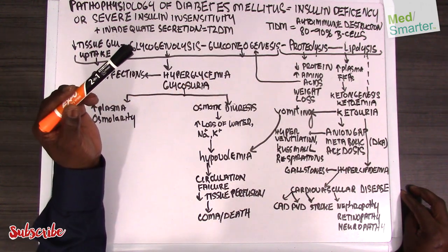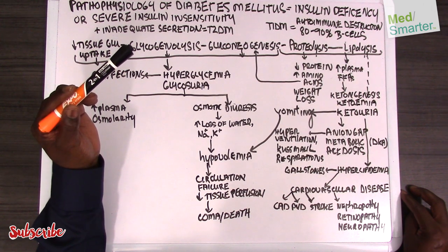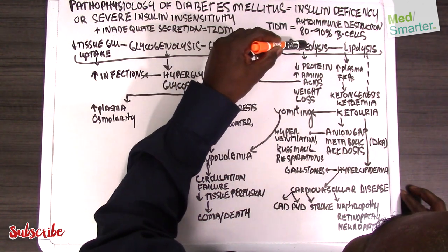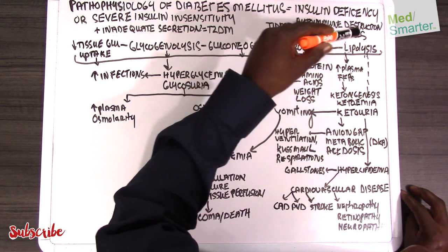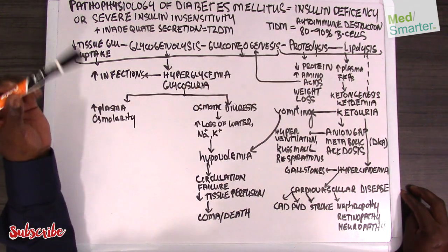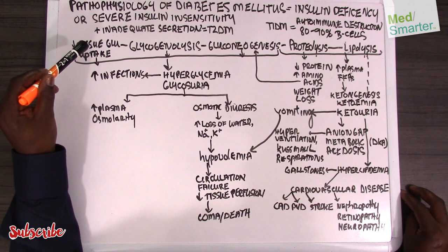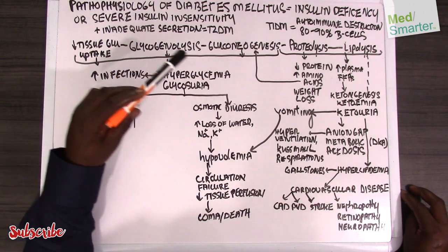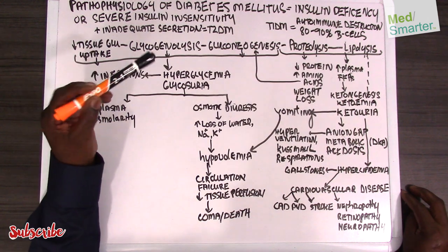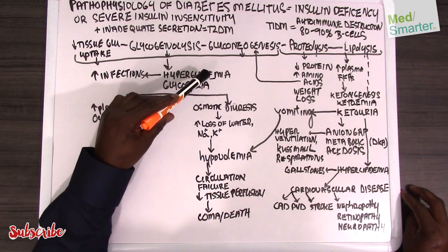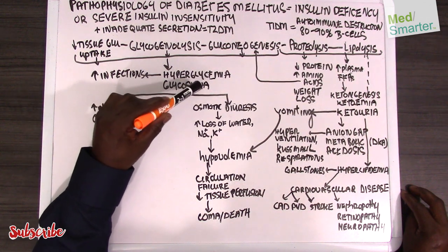There is also, as a result of this decreased glucose uptake by the cells, going to be proteolysis and lipolysis. The decrease in tissue glucose, the glycogenolysis, and the gluconeogenesis are going to result in hyperglycemia and glycosuria.